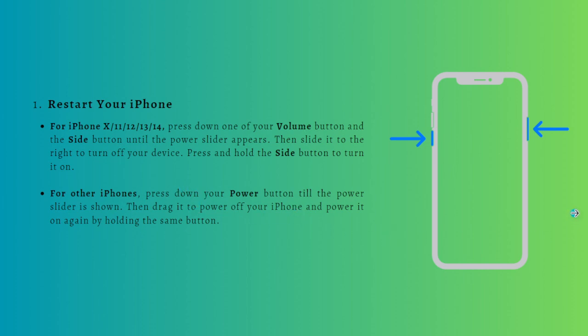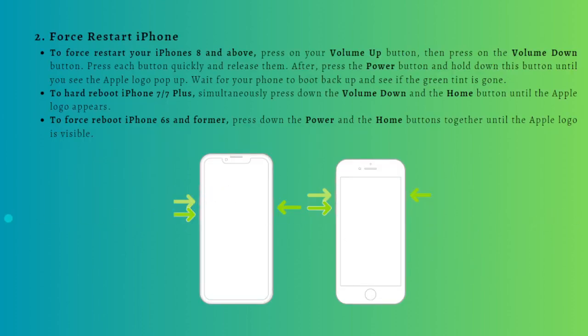Next, you can force restart your iPhone. If a regular restart failed to fix the green screen issue, force restarting can be useful, especially when the screen flashing green is due to software bugs. Follow the process based on your device: iPhone 8 and above follow the first set of steps, iPhone 7 and 7 Plus follow the second, and iPhone 6 and older models follow the last process.